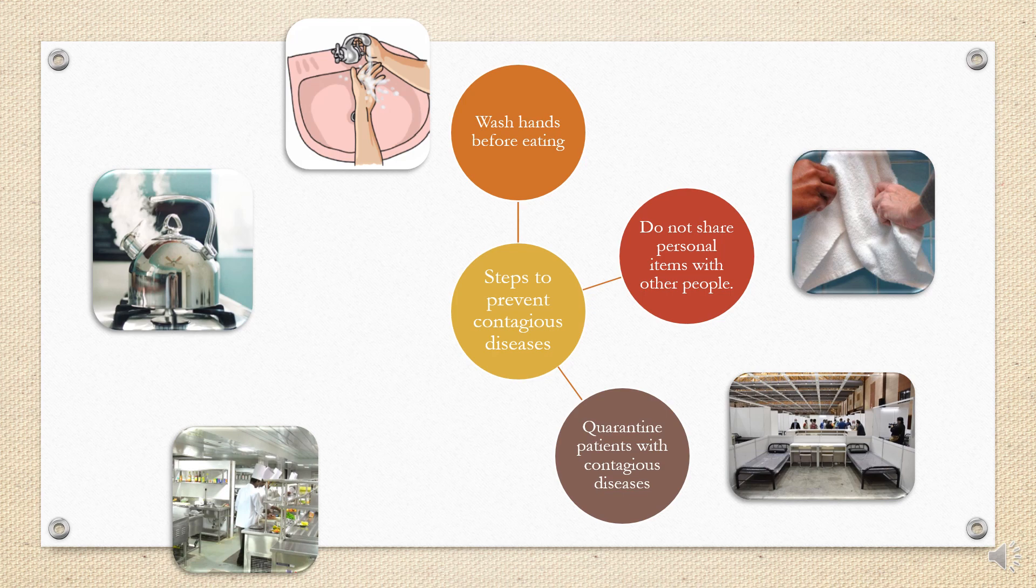Quarantine patients with contagious disease. This is what Malaysia is doing now. They are quarantining the people who are already infected with COVID-19 at a certain place so they do not infect other people. Next, prepare hygienic food. This is important. If we are not eating hygienic, clean food, we might get food poisoning. And last one, boil water for drinking. This is also one of the important things because microorganisms can live in the water. Remember, there are several types of microorganisms that can live in water. So it is important for us to boil water to kill the microorganisms.